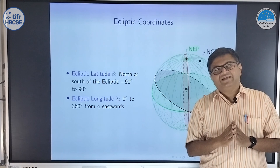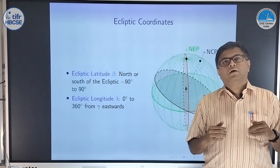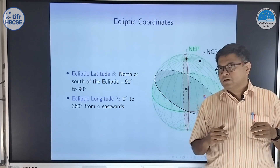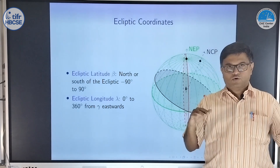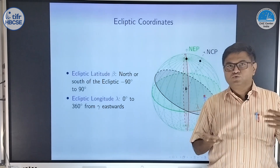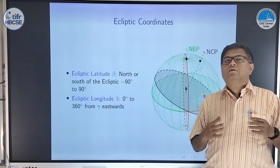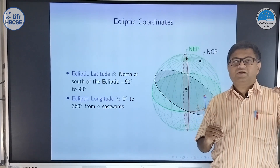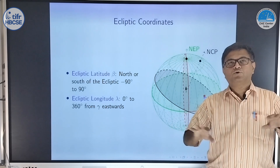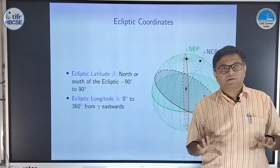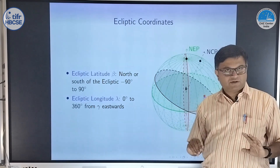The advantage of this system is that for solar system objects, essentially since beta is almost 0 for all the planets, the moon, and most of the asteroids, we can work with essentially a single coordinate. As an approximation, assuming beta is 0 and doing calculations that way, we already get answers which are fairly close to the actual answer.